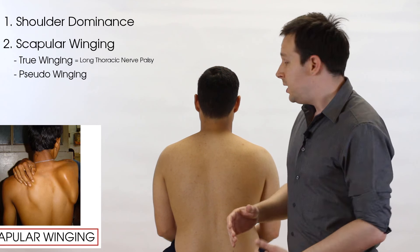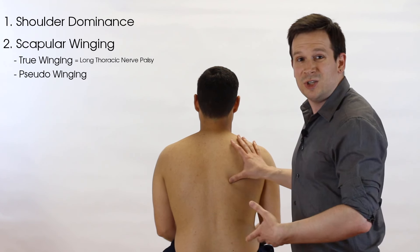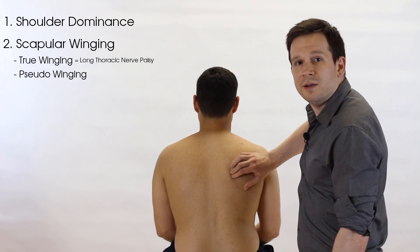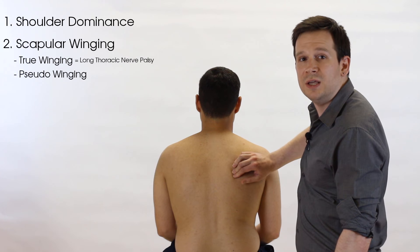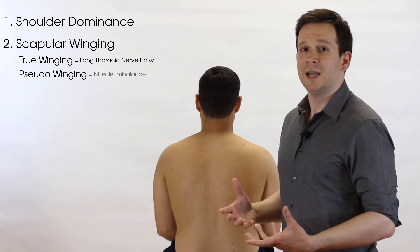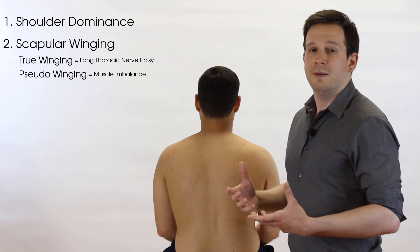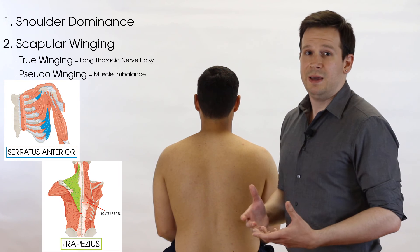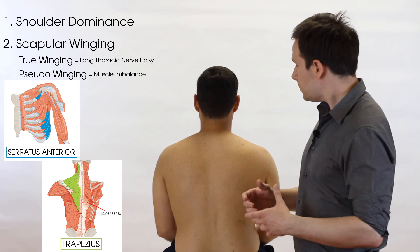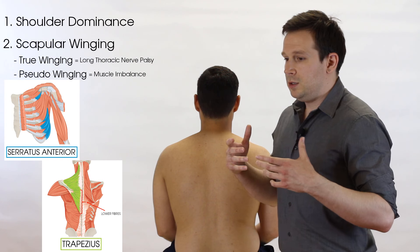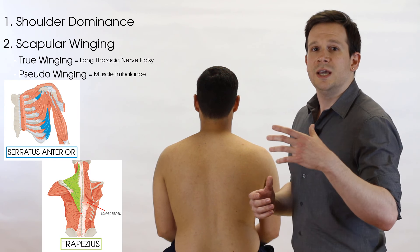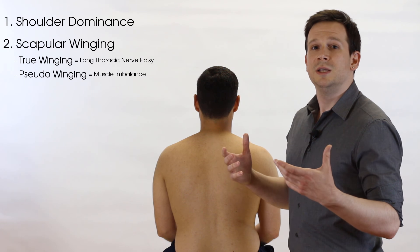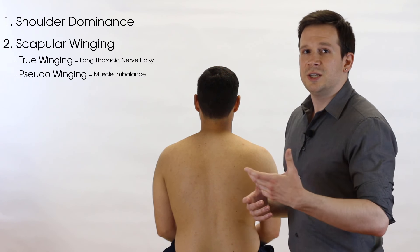Pseudo winging is where, either at rest or when the patient moves, you can almost get your fingers around and feel the gapping underneath the scapula. This is normally linked to a muscle imbalance, and most of the time serratus anterior or lower trapezius activation is blamed for this pseudo winging.